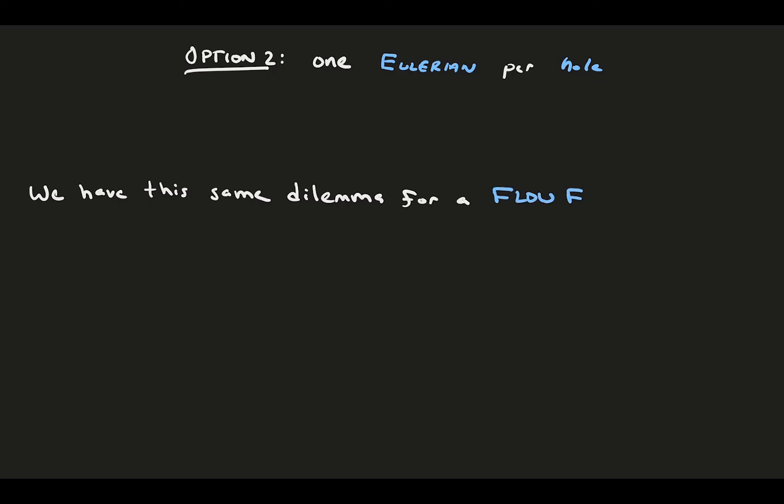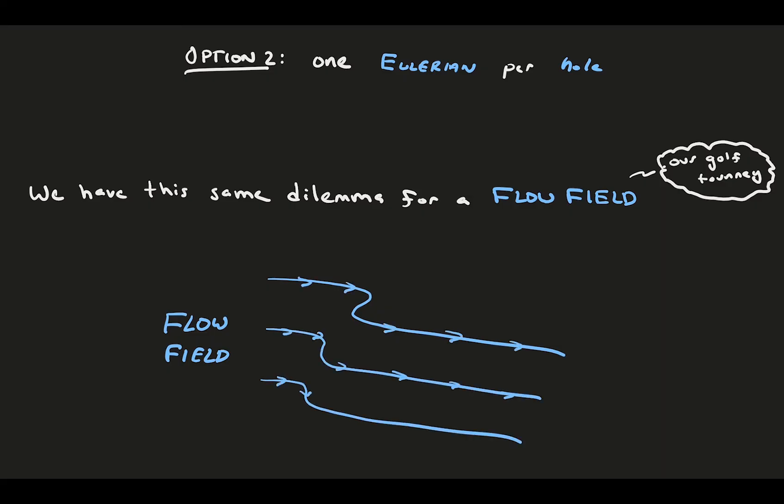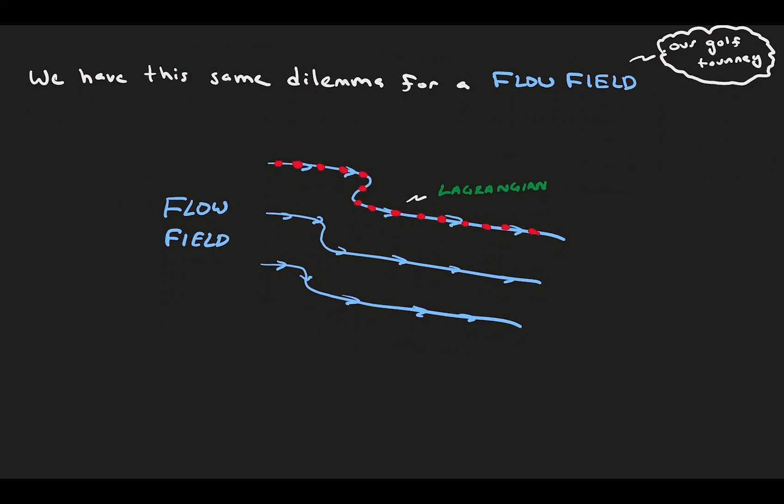In fluids, we have this exact same dilemma. Our golf tournament is the flow field. We want to be able to describe the flow field at multiple points in space and time using our observations. If we take the Lagrangian approach, we follow one single particle as it moves along a streamline and describe its motion and time. If we take an Eulerian approach, we define a fluid element or observational window and we watch as flow enters and leaves our view, noting the change in the fluid behavior as it passes by.